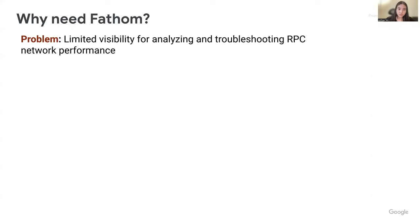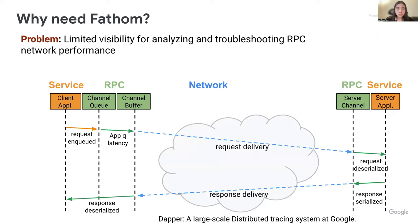So why do we need Fathom? Although most Google services use RPCs, we have long grappled with a fundamental challenge: lack of comprehensive visibility into RPC performance in network stacks. This deficiency has made it challenging to analyze and troubleshoot RPC network performance issues. To illustrate this limitation, let's consider Google's large-scale tracing system, Dapper.